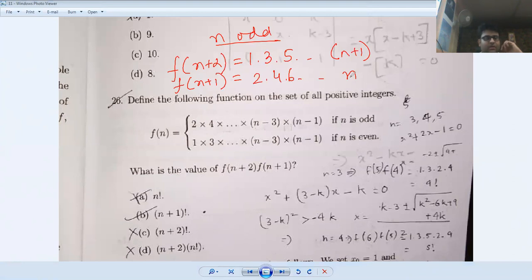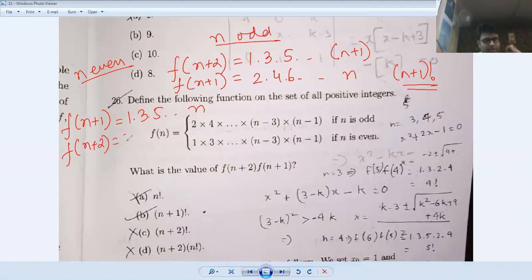That's (n+1)! if n is odd. If n is even, f(n+1) is odd, so it will be 1×3×5 up till n. And n+2 will be even, so it will be 2×4×6 up to n+1.